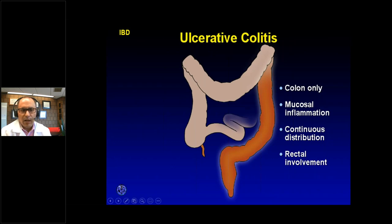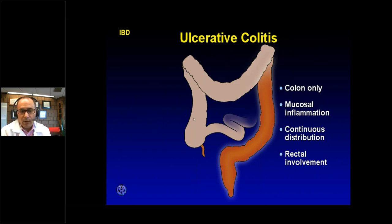How do you differentiate the two diseases? Ulcerative colitis typically presents with bloody diarrhea. If the onset of symptoms is within weeks or months of stopping smoking, that's suspicious for UC. Ulcerative colitis almost always starts in the rectum and extends continuously from there. It can involve the entire colon but typically does not go into the small bowel. The inflammation tends to be more superficial, and we don't see skip areas — it's continuous.